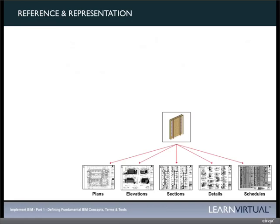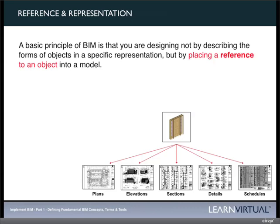Reference and representation is another important concept. In 2D CAD, reference and representation is simply lines and circles drawn on a plan, whether by hand or by CAD. In BIM, however, that representation is specifically by placing a reference to an object. Objects are a central component to any BIM system — not just windows or doors, but even a wall or a line can be an object. Every element within a BIM program is an object.